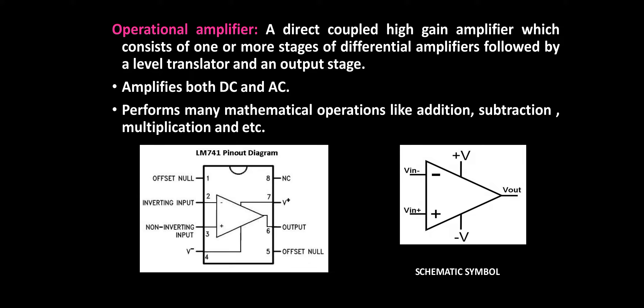Let's see the definition of operational amplifier. A direct coupled high gain amplifier which consists of one or more stages of differential amplifier followed by a level translator and the output stage. It is one of the high gain amplifiers and it is the combination of two or more differential amplifiers followed by the level translator and the output stage. Simply, we can call the operational amplifier a high gain amplifier. It consists of two or more differential amplifiers.